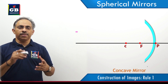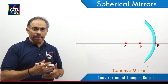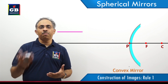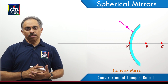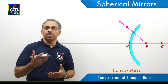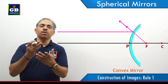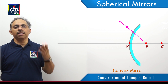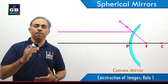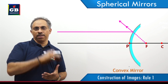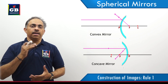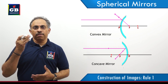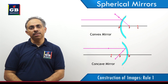The first rule for constructing images: a ray parallel to the principal axis will pass through the principal focus in the case of a concave mirror, and appears to pass through the principal focus in the case of a convex mirror. In the case of a convex mirror, the light ray appears to pass through because the principal focus is behind the mirror — it cannot actually pass through. In the case of a concave mirror, the reflected ray will actually pass through the principal focus. That is the first rule for constructing images using geometry.